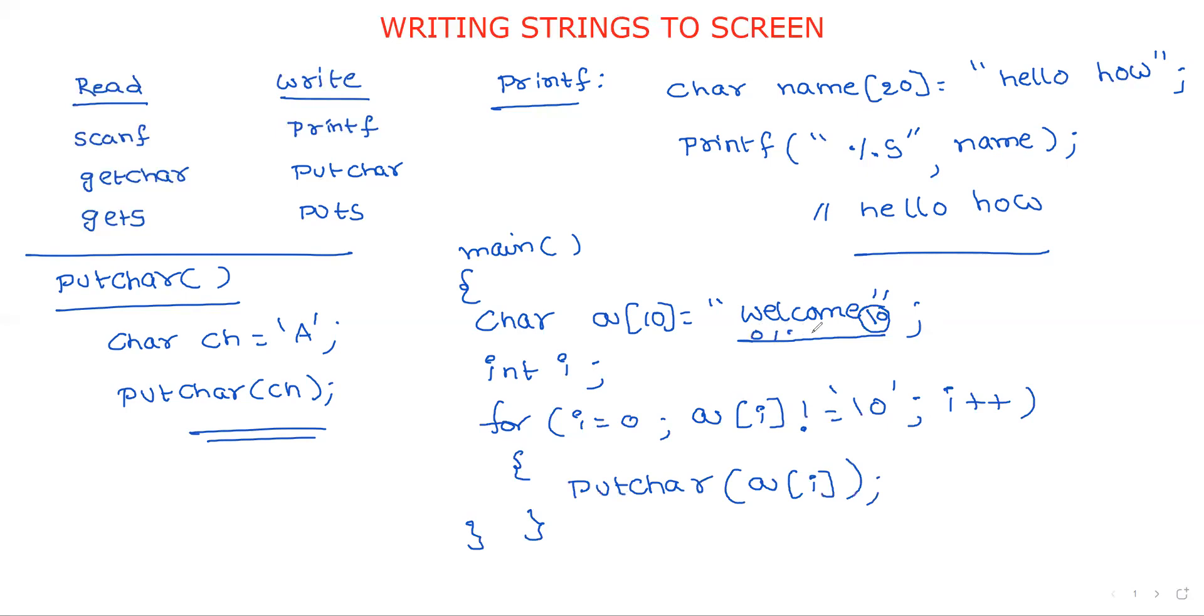This is the program. First index is zero, then first, second, third, fourth, fifth, sixth, and so on. i equals 0, what do you mean by a[0]? a[0] is 'w'. w is not equal to null, okay, w is printed. In the next iteration, i++, i becomes 1. a[1] equals 'e', then w, e, l, c, o, m, e. In the next step, whenever null character is found, if both are equal, the condition is false and it comes out of the loop.